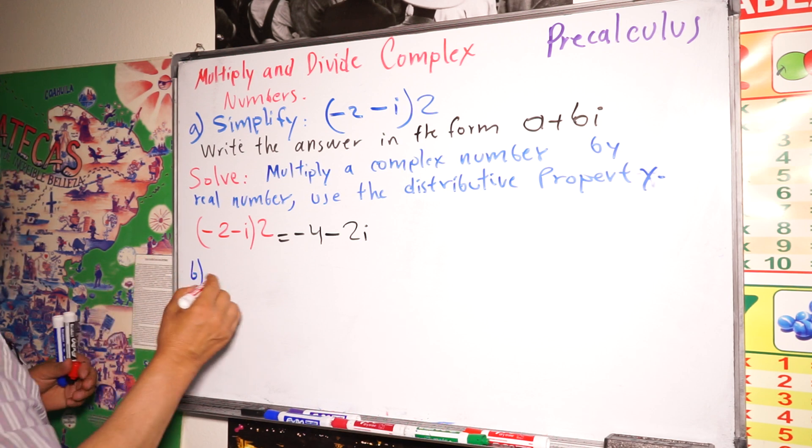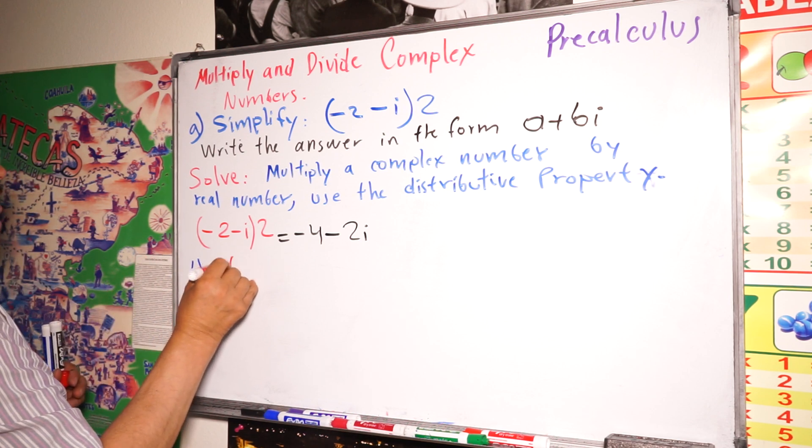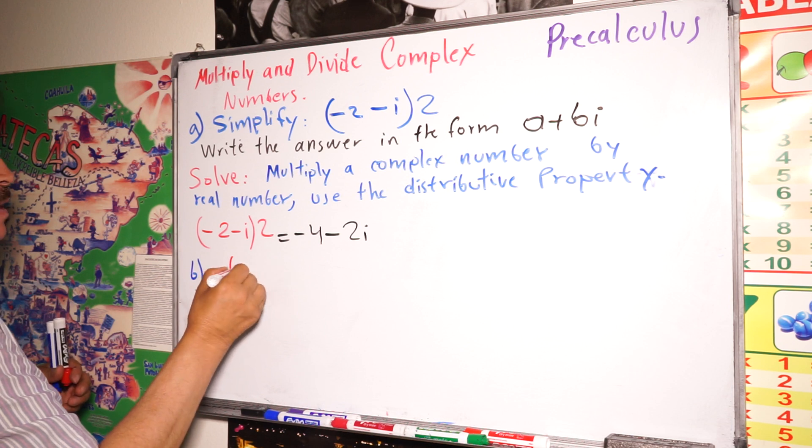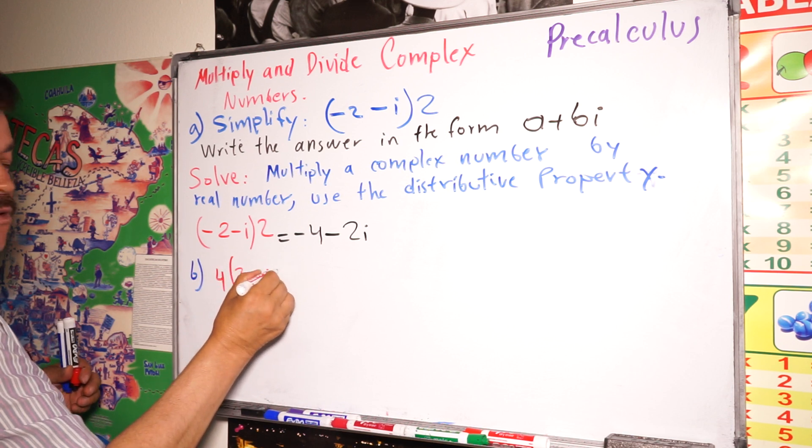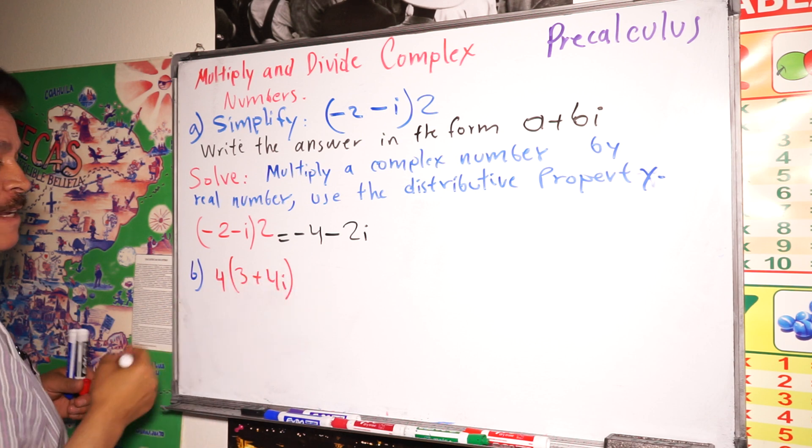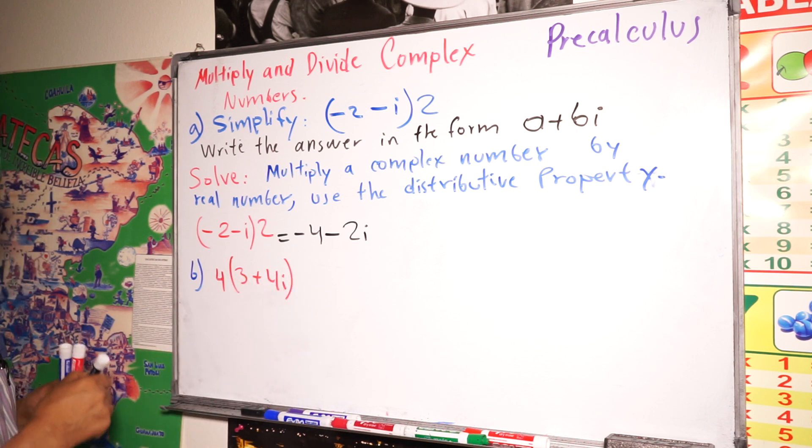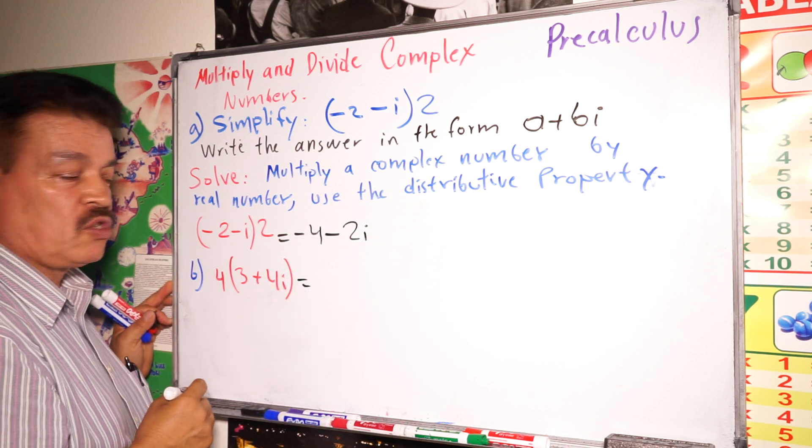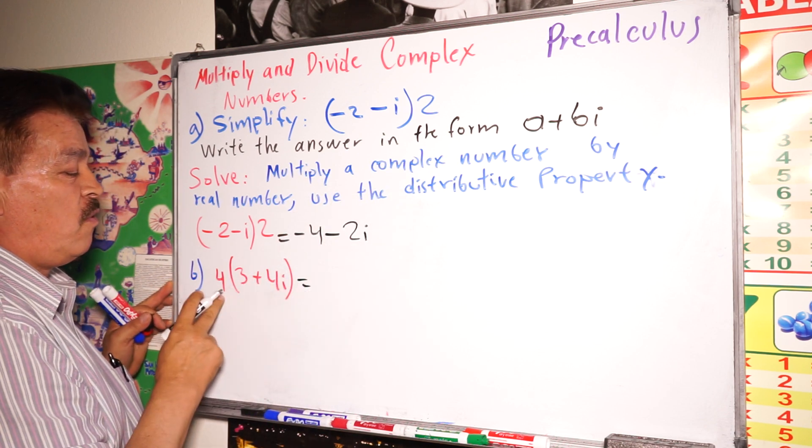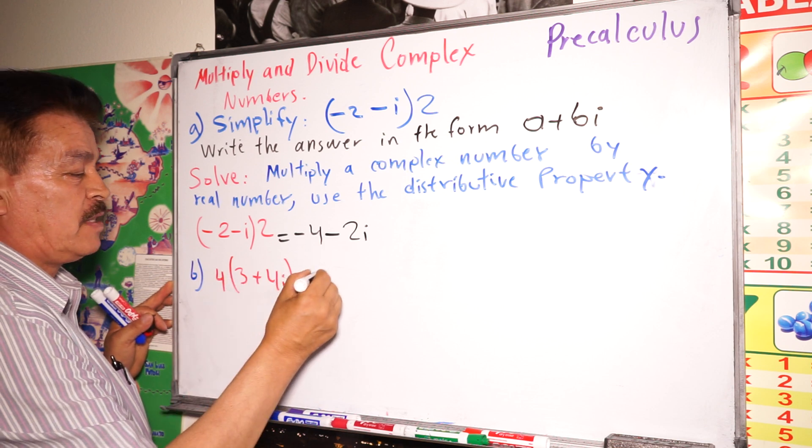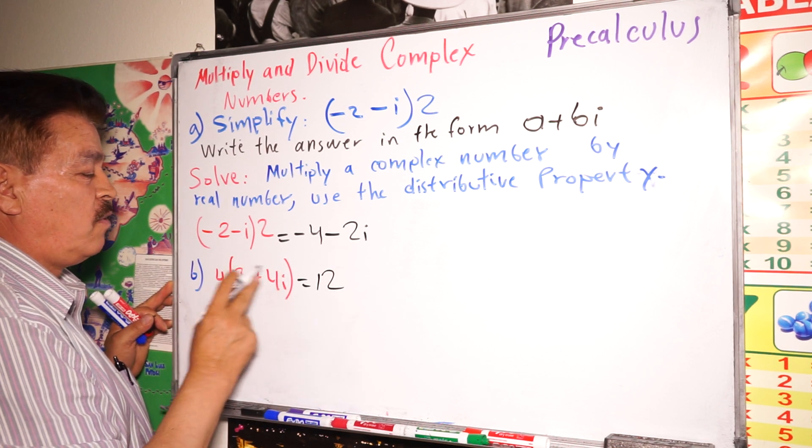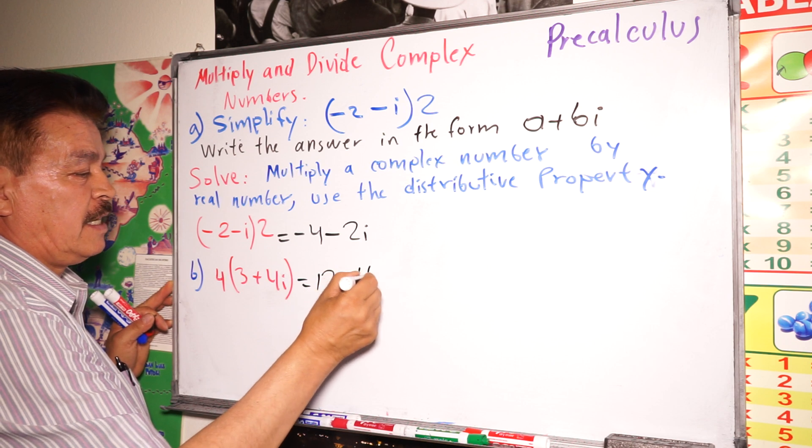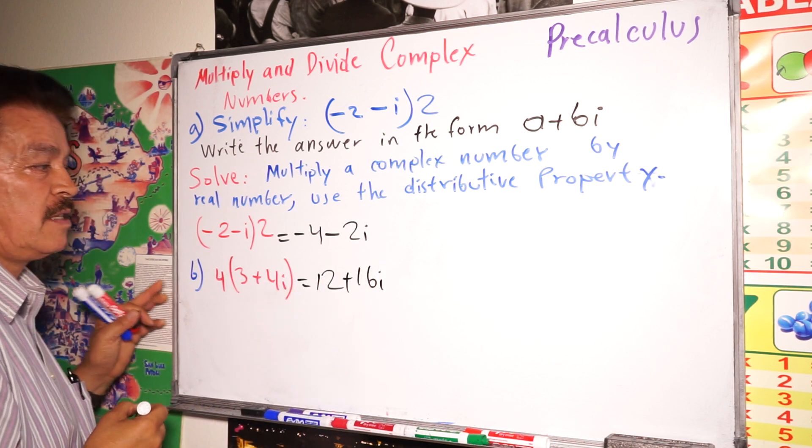Multiply 4 × (3 + 4i). It's very simple. If you use the distributive property, 4 times 3 is 12 plus 4 times 4 is 16i. That's the answer.